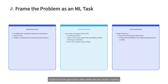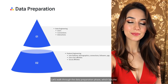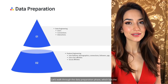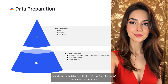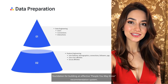A hybrid of both approaches often yields the best results — starting with graph signals for candidate generation and then using LTR for fine-grained ranking. This lays the foundation for building an effective people-you-may-know recommendation system.